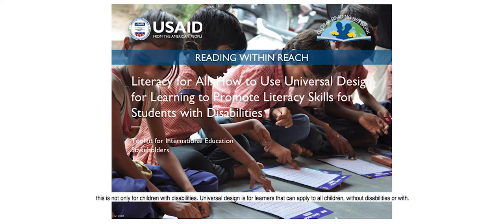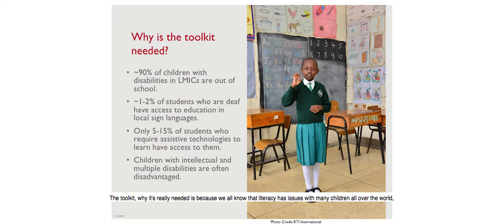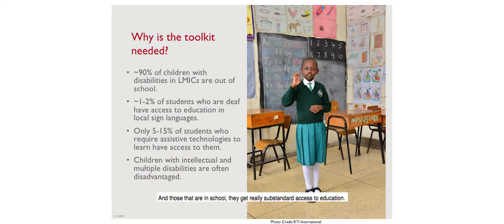Universal Design for Learning is not only for children with disabilities - it can apply to all children. The toolkit is really needed because literacy has issues with many children all over the world. About 90% of children with disabilities in lower middle income countries do not even go to school.